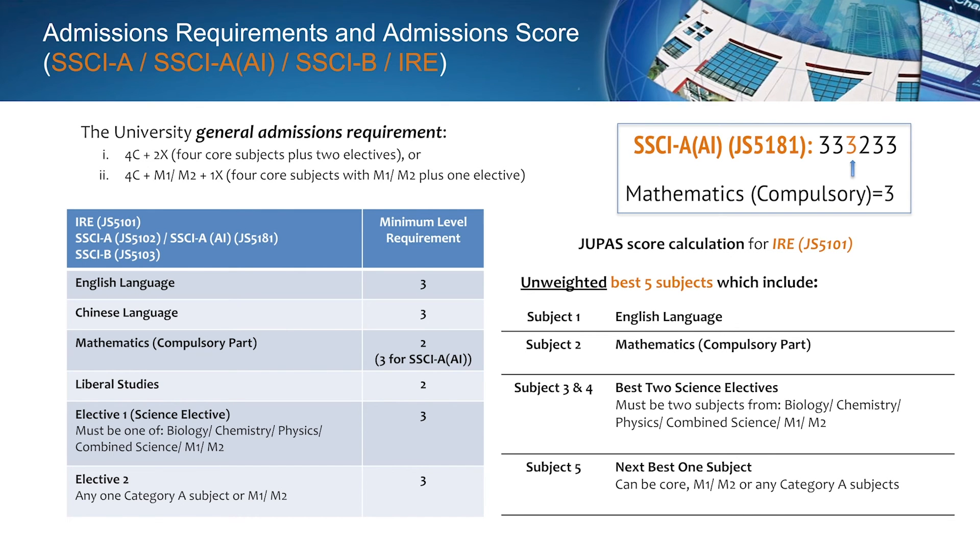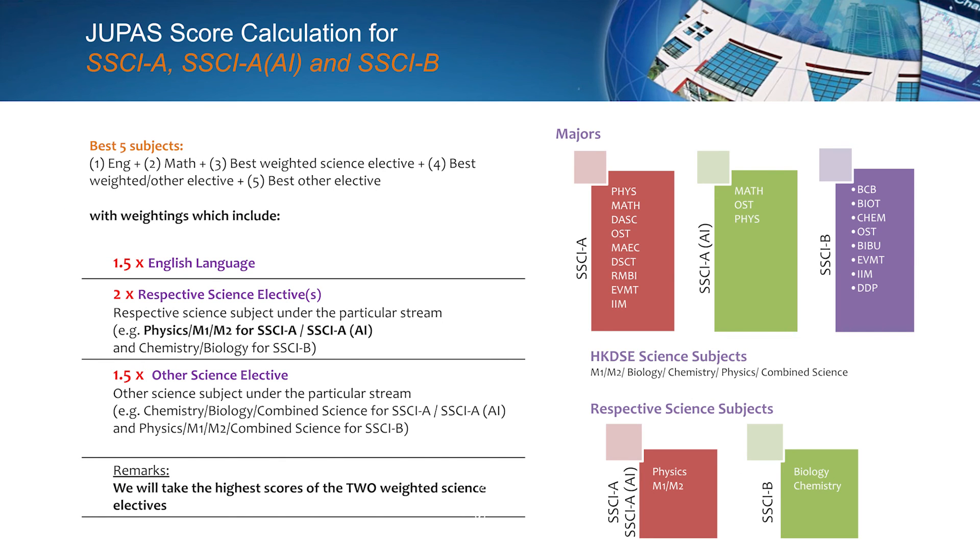Let me say something about admission requirements. The university general admission requirements are shown in the table here. We have minimal level of requirements for each subject shown here, in short, 332233. The score formula is shown in the diagram here.